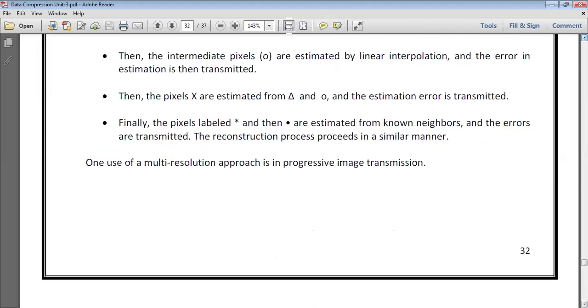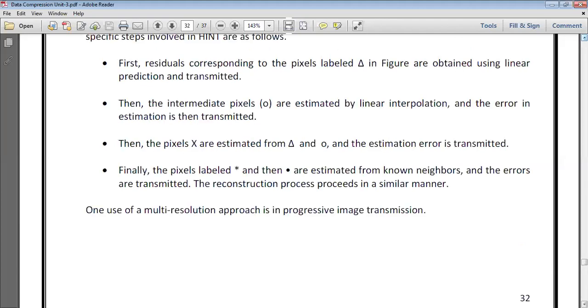So we only know how HINT will work and how this tabular representation of the pixels is performed. There are only four steps. First, we label the pixels with triangles. How do we label with the triangle? By using linear prediction and transmission. What the linear prediction and transmission are is the mathematical portion.